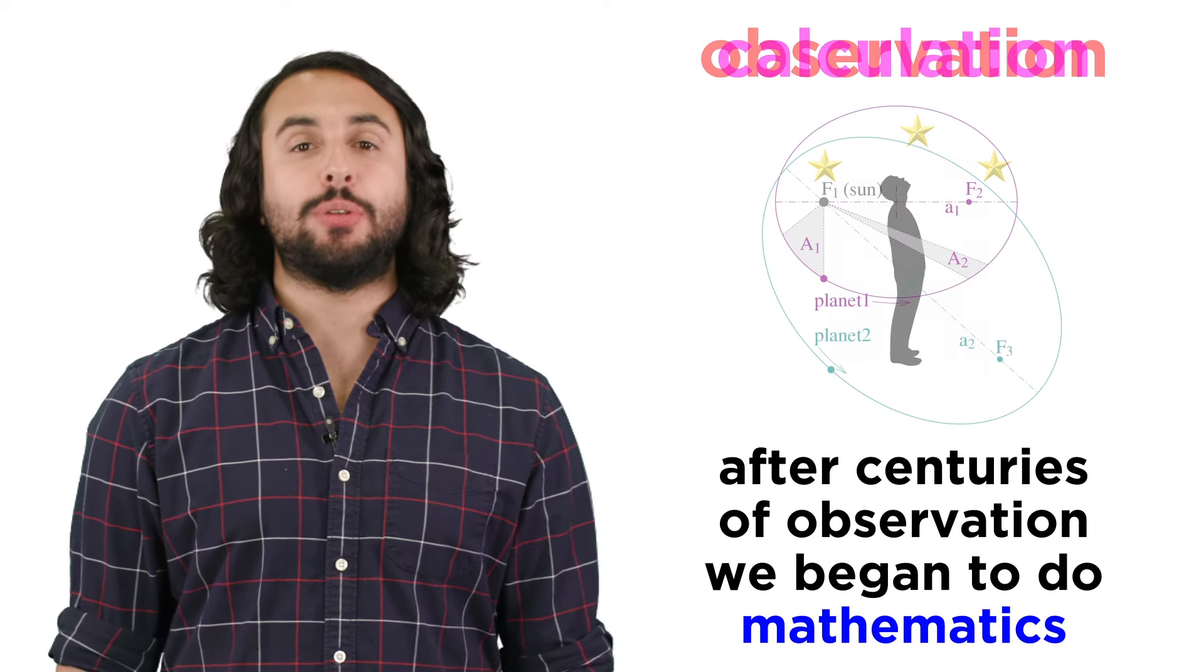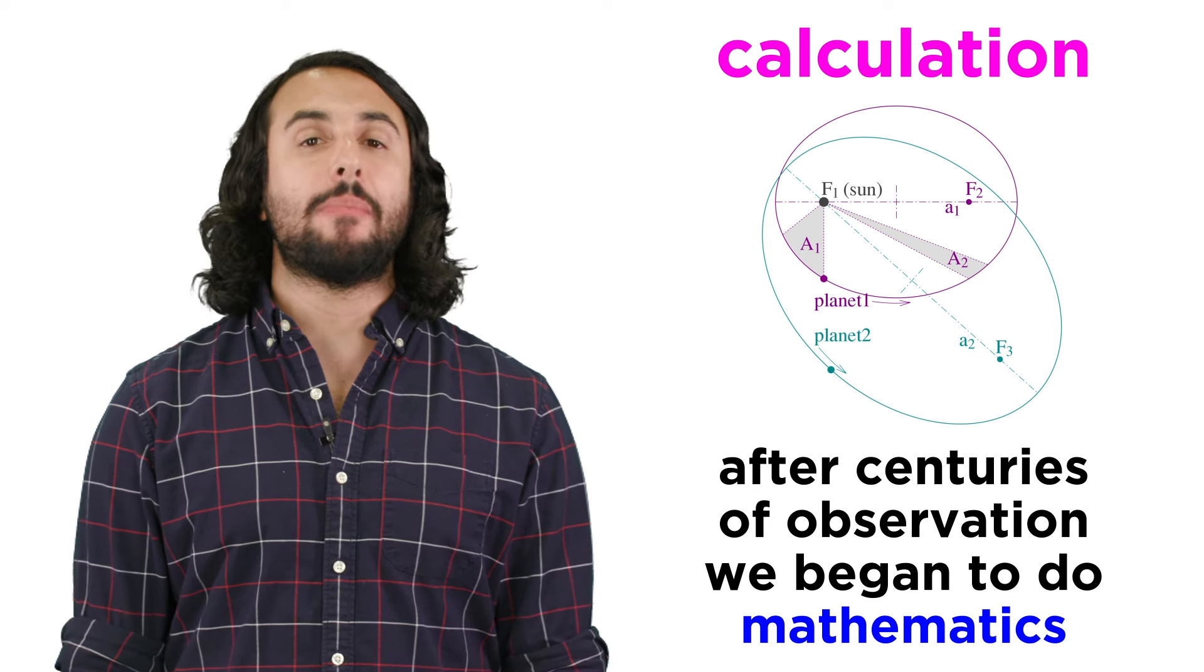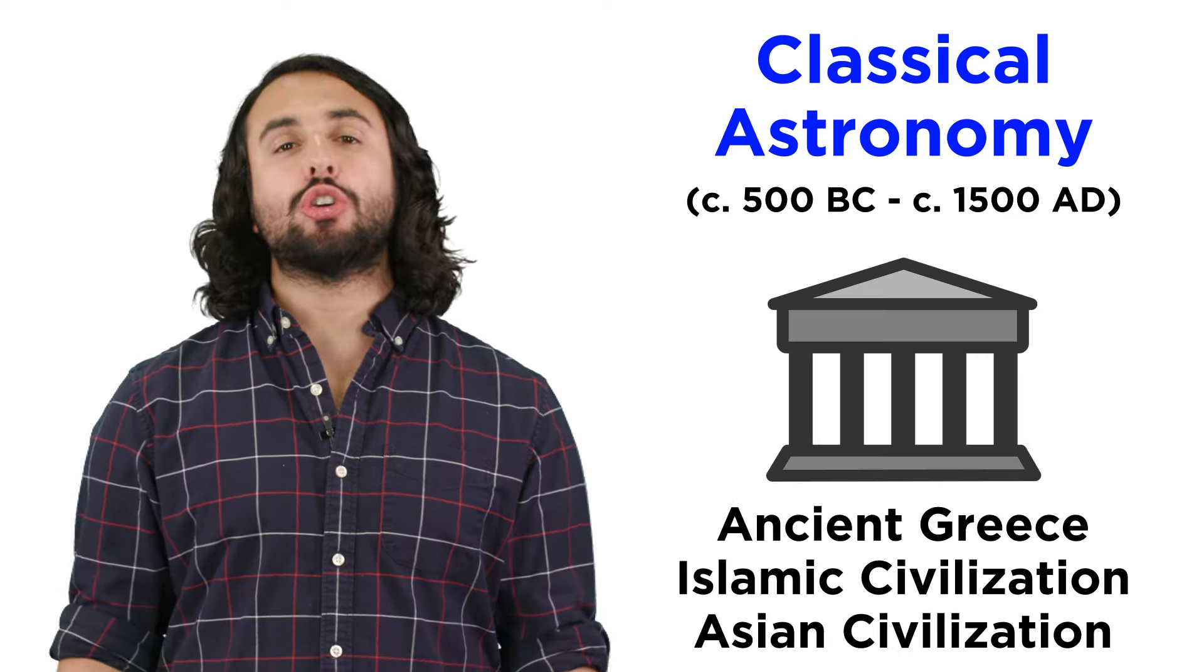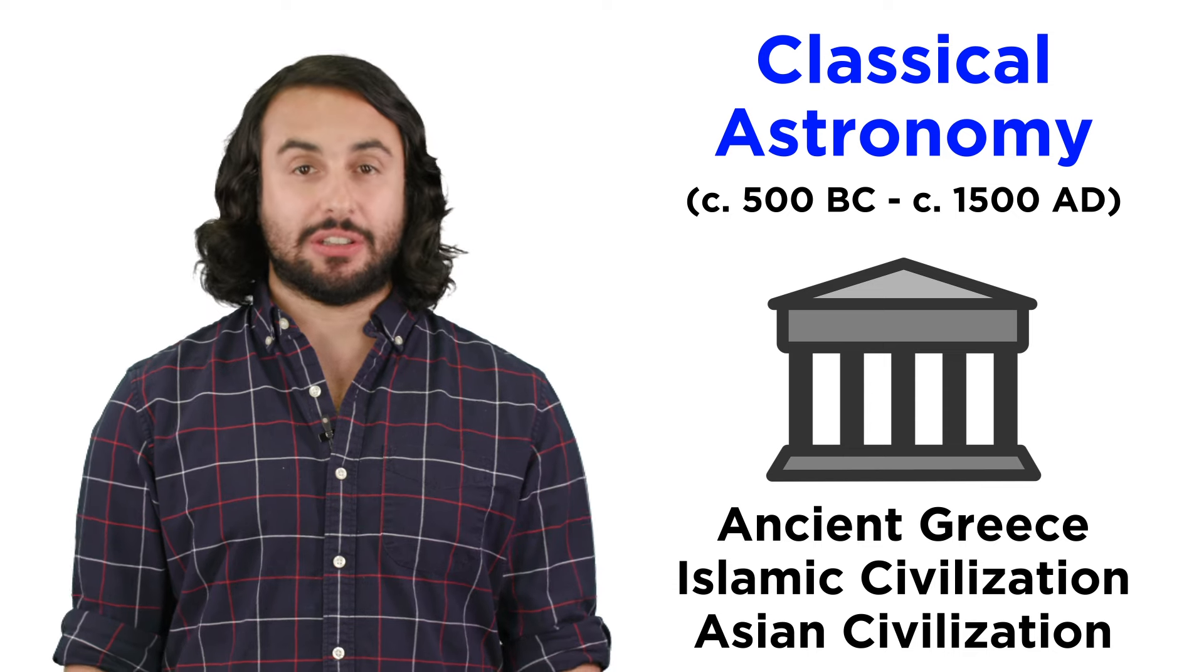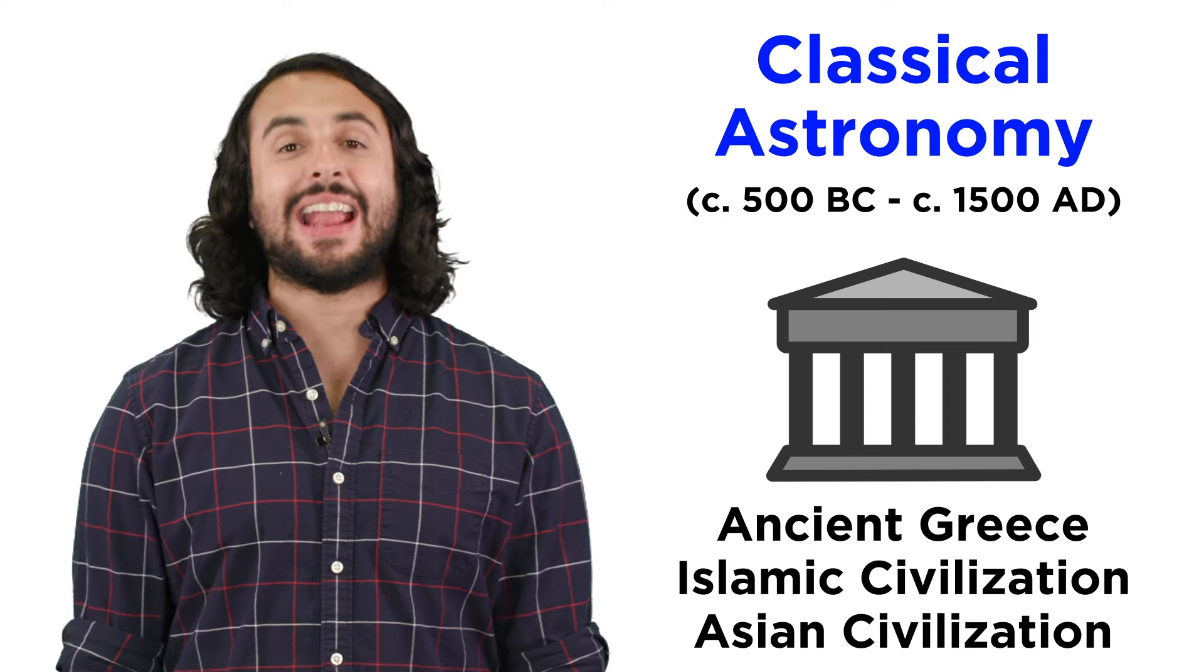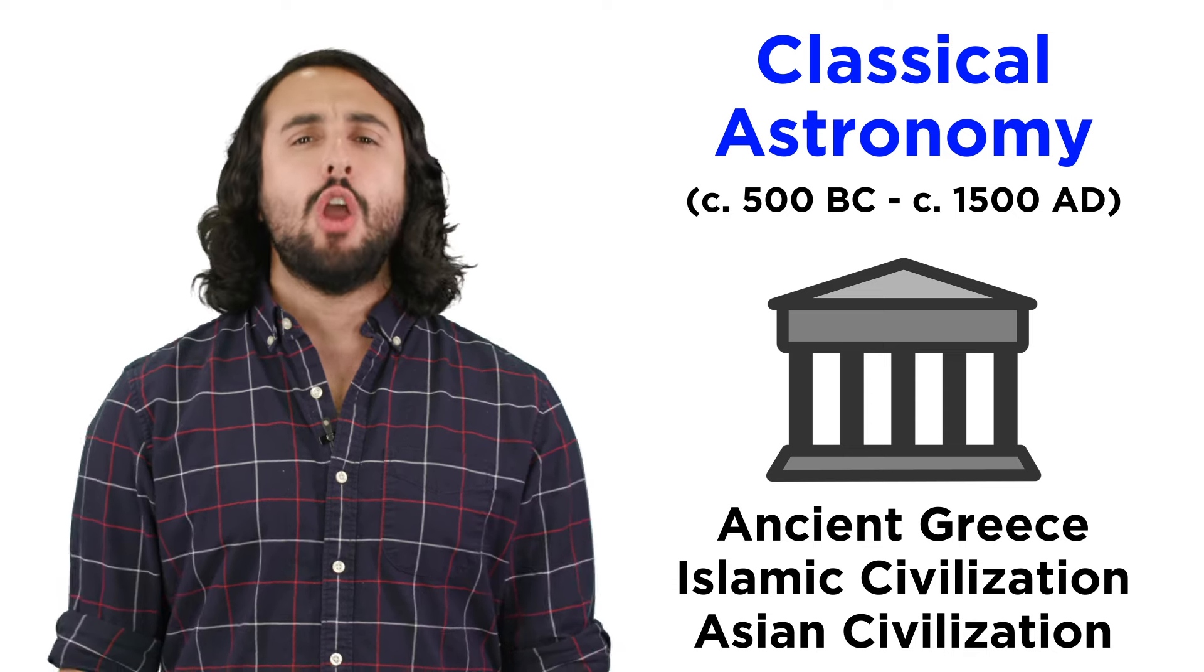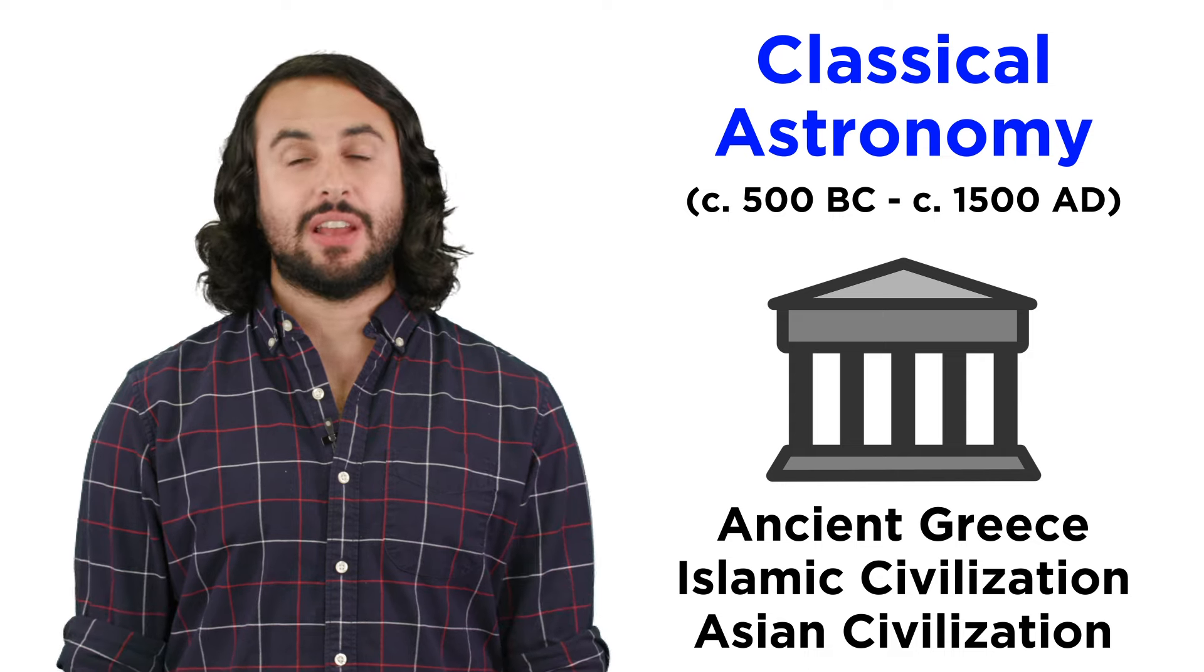After many centuries of pure observation, our approach to astronomy became more mathematical. Some of the earliest known scientific calculations happened during the classical period of astronomy in ancient Greece and other contemporaneous civilizations. What were some of these calculations, and what did they tell us?